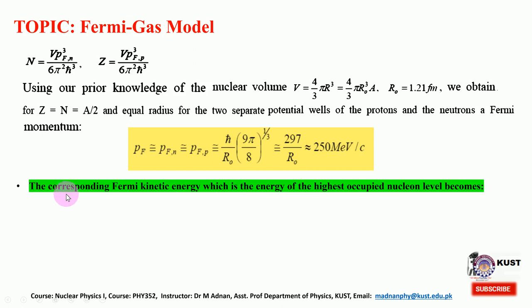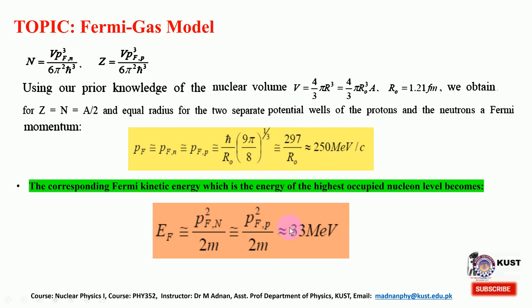The corresponding Fermi kinetic energy — the energy of the highest occupied nucleon level, that is the Fermi level — is around 33 MeV. If you remember the deuteron nucleus, the potential V₀, or the interaction potential energy between two nucleons, was around 35–36 MeV. Here, using the Fermi model analogous to the free electron gas in solid state, from the standard expressions we calculated the momentum and the corresponding Fermi energy. The kinetic energy is also of the order of the potential energy, which was around 35–36 MeV.